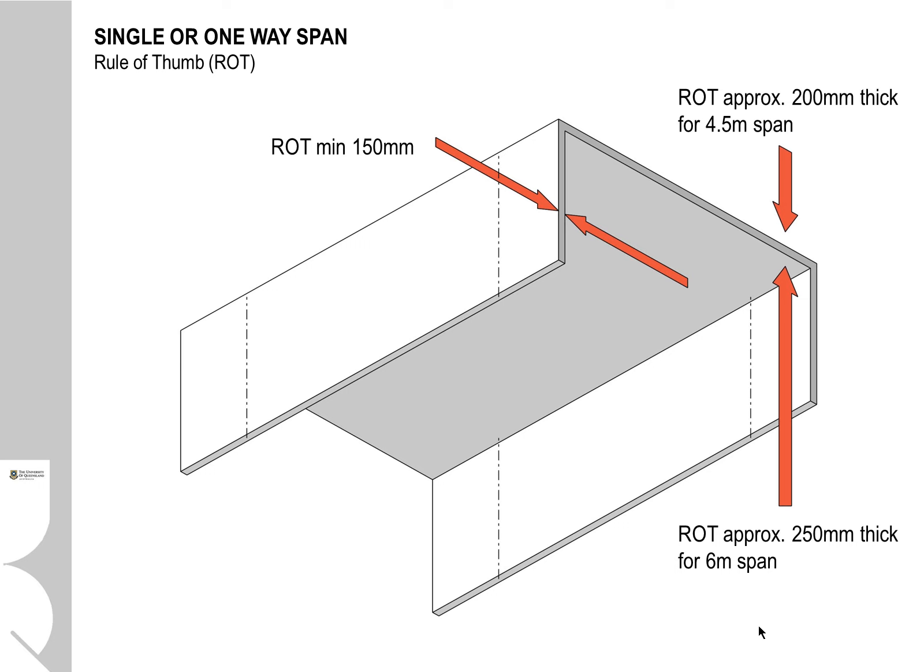For a simple one-way span going about 4.5 metres, a thickness of about 200mm for a slab would be adequate. If we were pushing that out to 6 metres, maybe 250mm thick would also be quite acceptable.